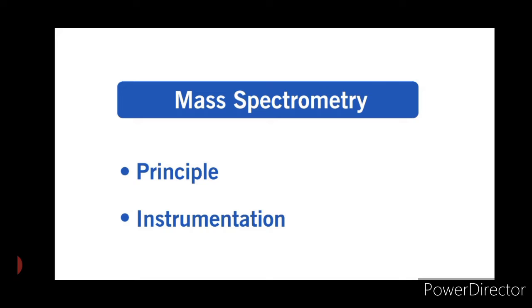And third S is speed, that is the rate of analysis is very fast. In this video I am going to discuss two aspects: first, principle of mass spectrometry, and second, instrumentation related to mass spectrometry. So without further delay, let us understand principle and instrumentation of mass spectrometry.